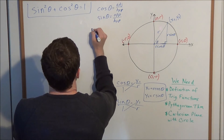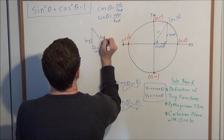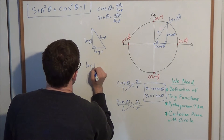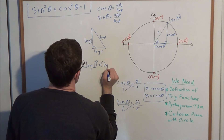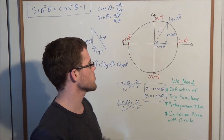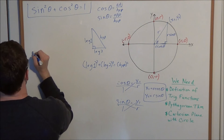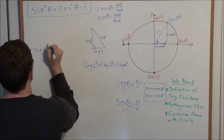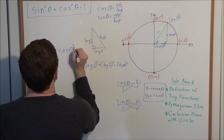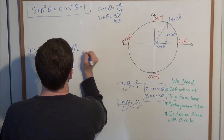Remember, the Pythagorean theorem states that leg₁ squared plus leg₂ squared equals the hypotenuse squared. Applying this to our right triangle, with leg₁ as r sine theta and leg₂ as r cosine theta, we get: (r sine theta)² plus (r cosine theta)² equals the hypotenuse squared, which in this case is r squared.